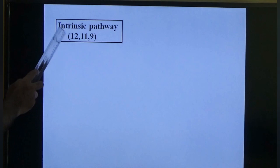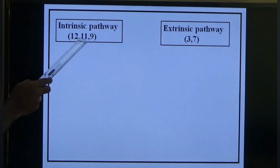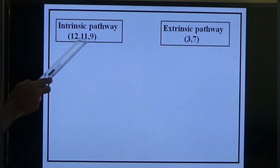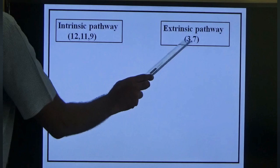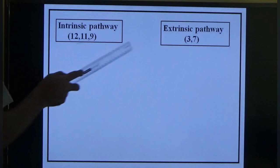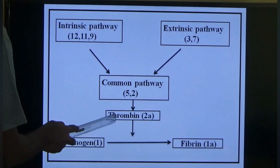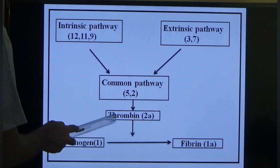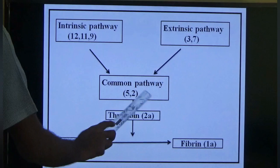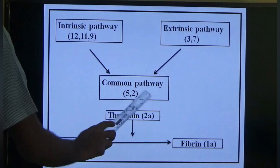Intrinsic pathway involves factors XII, XI, and IX (remembering '12, 11, 9 except 10'). Extrinsic pathway involves factors III plus VII, leading to factor X. Both meet in the common pathway with factor V and factor II (prothrombin). Prothrombin (II) is converted to thrombin (IIa), which converts fibrinogen (factor I) to fibrin — the final product and basic aim of coagulation.